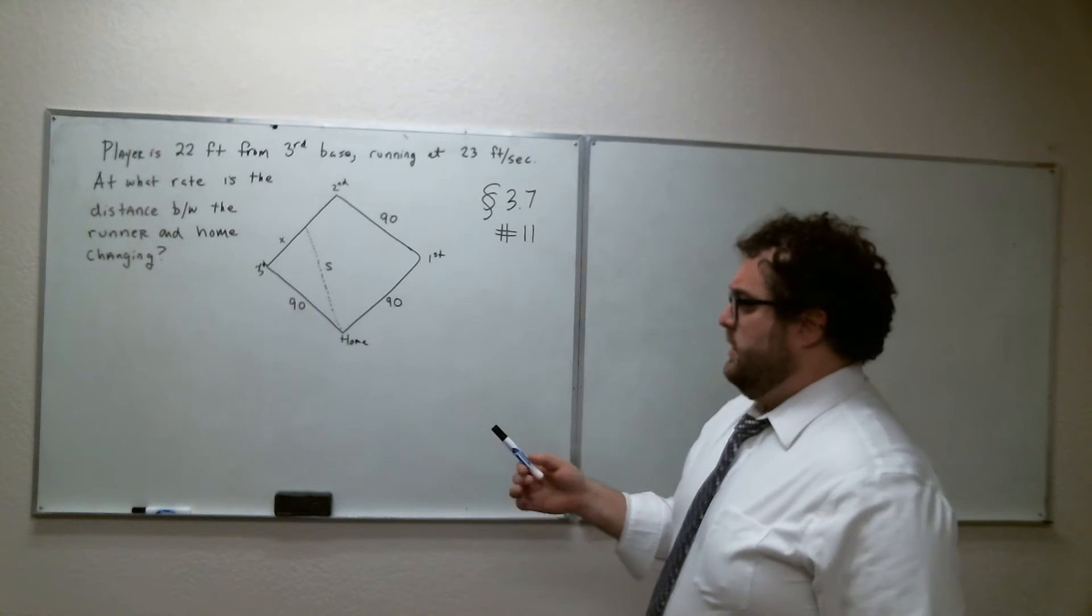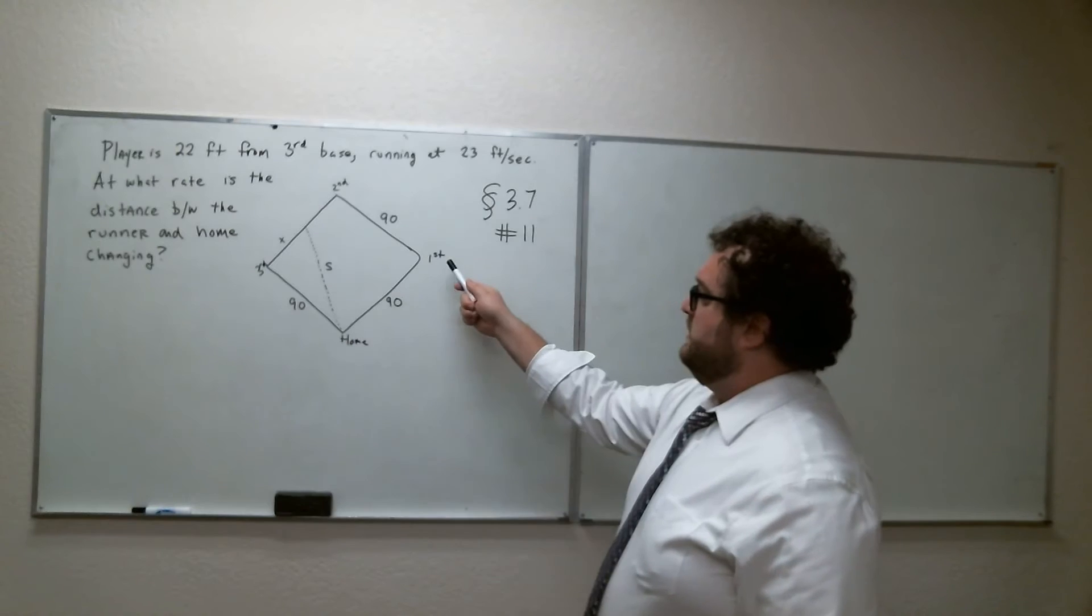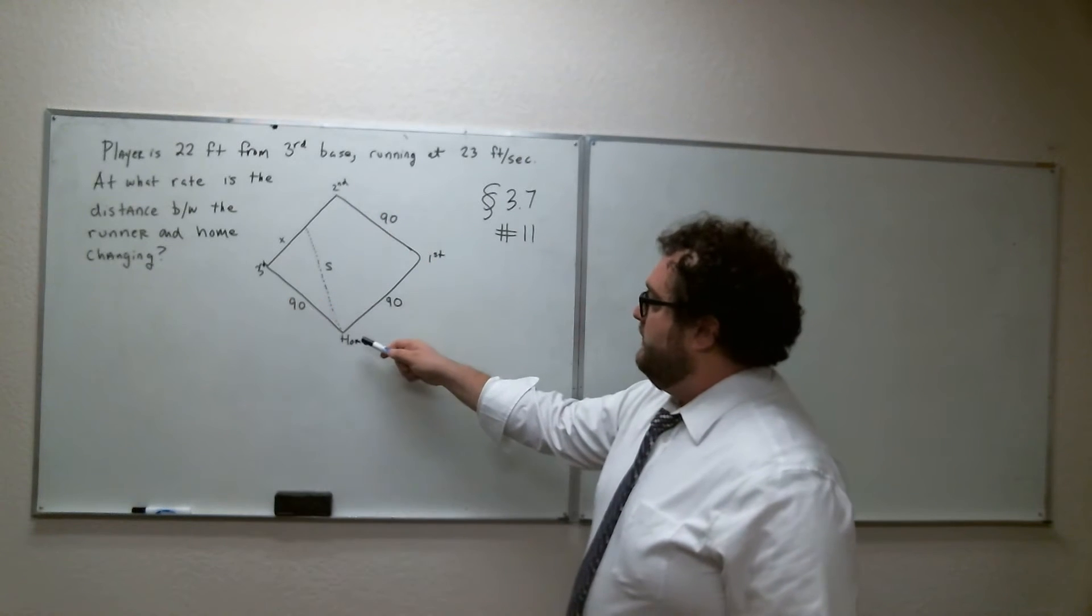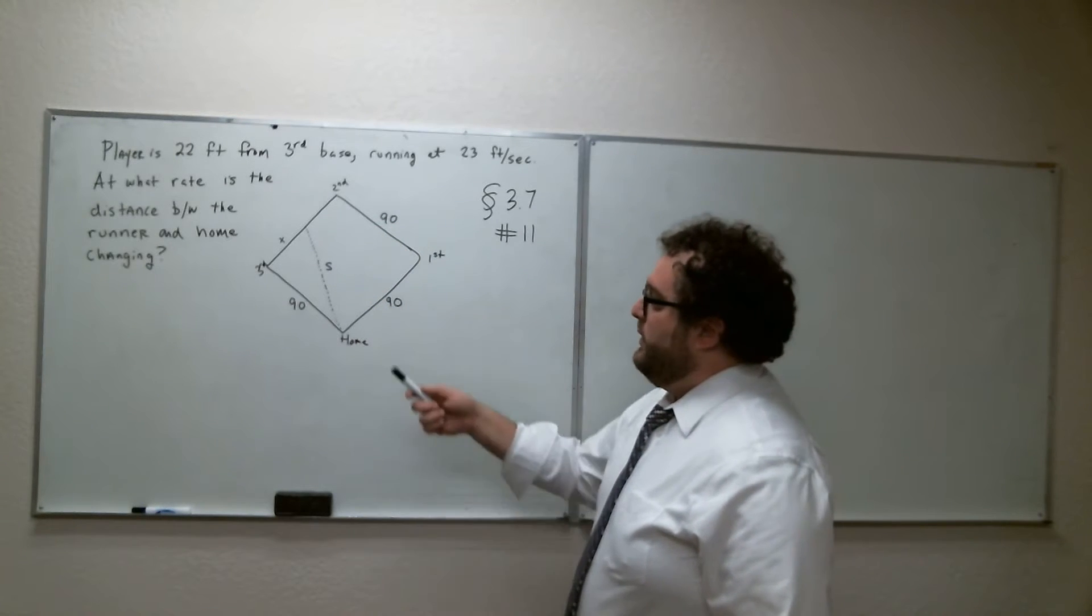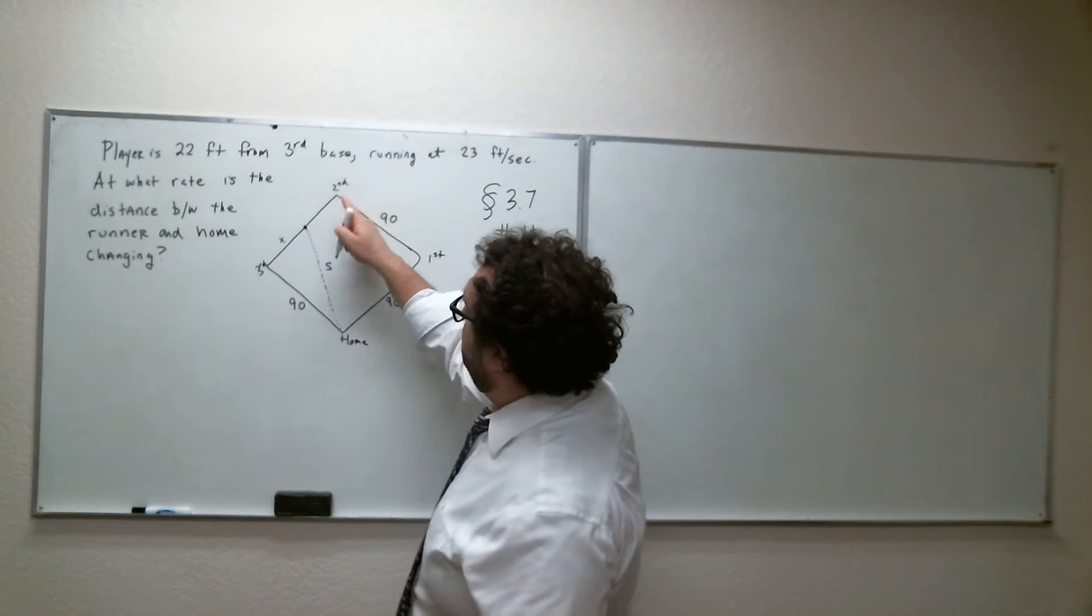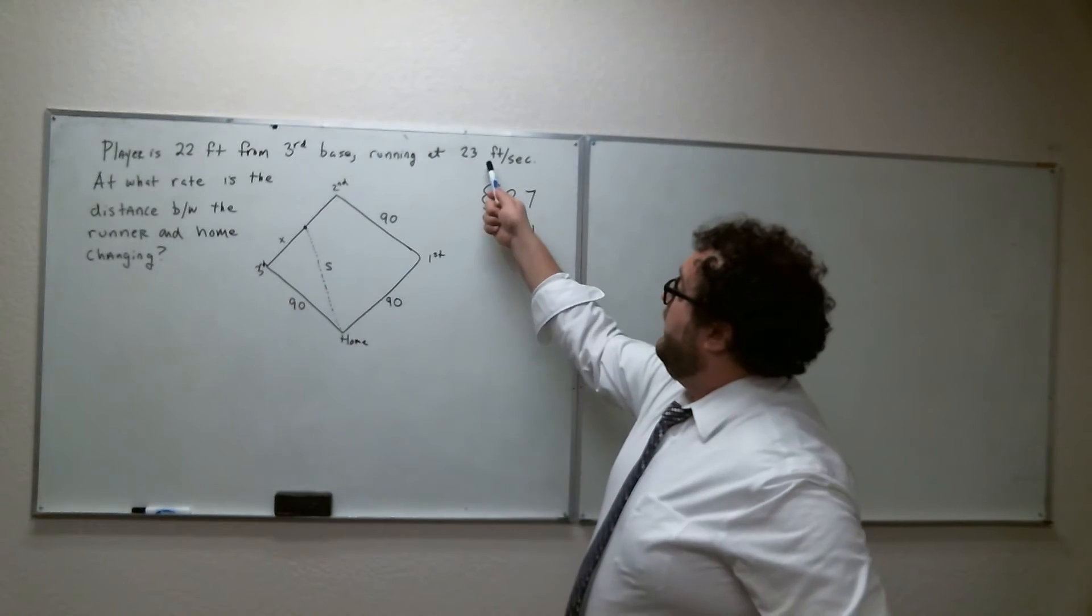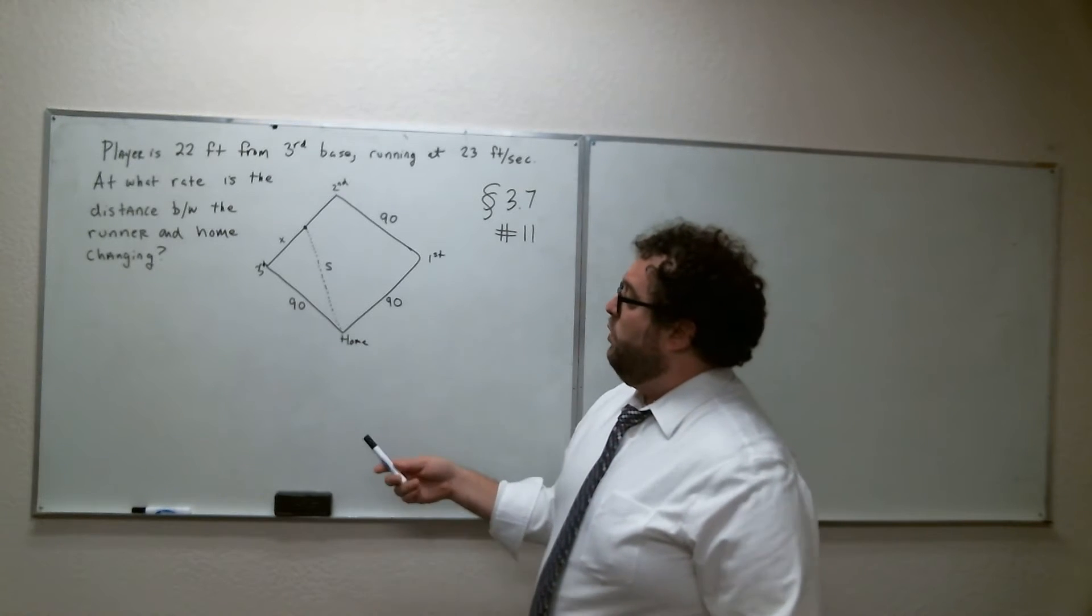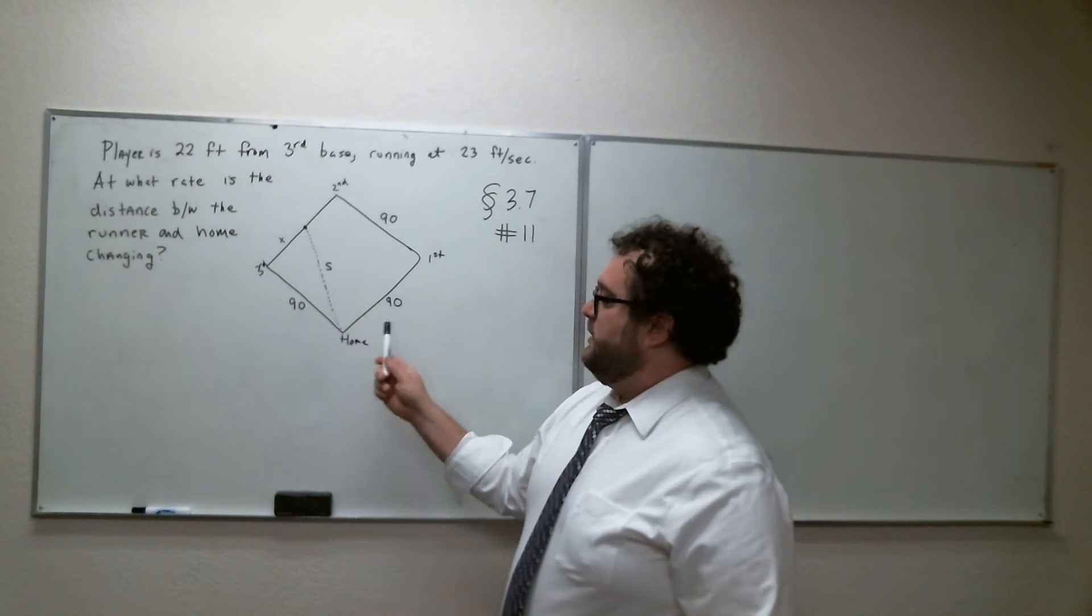The setup is this. We have a square baseball diamond, home plate, second base, third base. The sides here are 90 feet each. We have a runner over here between second base and third base running toward third base at a rate of 23 feet per second. And the question is, at what rate is this distance S, the distance between the player and home plate, at what rate is that changing?